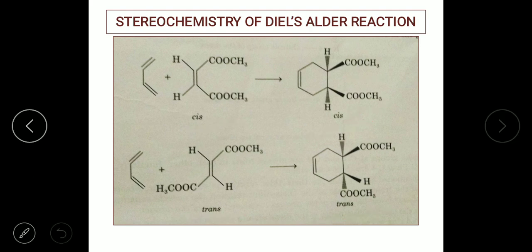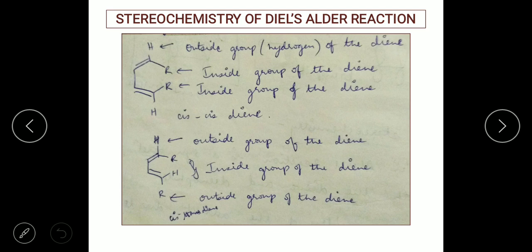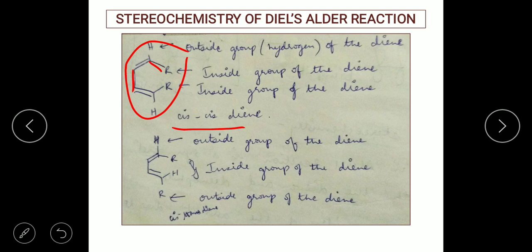One more aspect we should remember is the stereochemistry of the reactant. In a reactant with two hydrogens and two R groups, the two hydrogens can be called the outside group of the diene and the R groups can be called the inside group of the diene. This is an example for a cis-cis diene because taking the double bond as the standard, R and CH2 are cis on both ends.